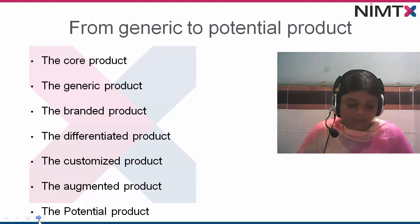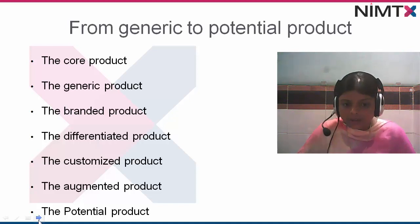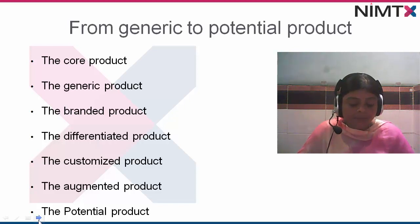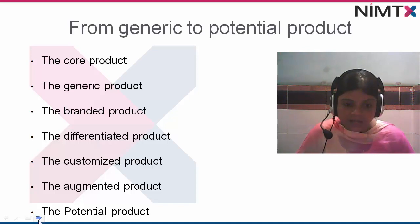Then augmented product — these are the products where the marketer has their own augmentations. You can take a recent example: in Kerala, a Bluetooth-enabled umbrella has been launched.